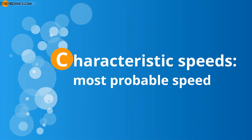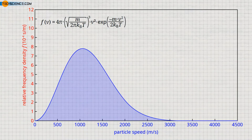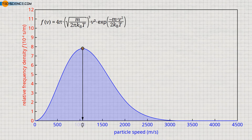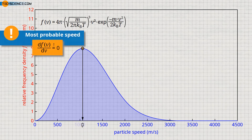Characteristic speeds — most probable speed. To characterize the speed distribution, different speeds are introduced. If a molecule is picked out by chance from an ideal gas, it is most likely that this molecule has a speed near the maximum of the speed distribution. The speed at the maximum of the distribution function is therefore also referred to as the most probable speed. The speed distribution can also be interpreted as a probability function.